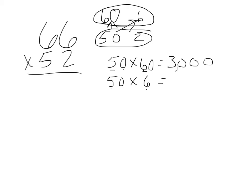5 times 6, once again, is 30. And I have one zero in my factors, so I'm going to put one zero in my product.